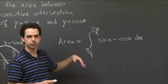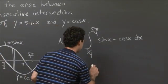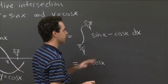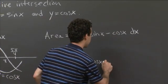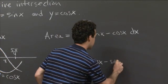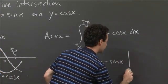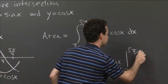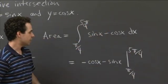Integral of sine—the function whose derivative is sine—is minus cosine x. And the function whose derivative is cosine is sine, so it's minus sine x between π over 4 and 5π over 4.